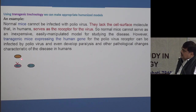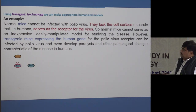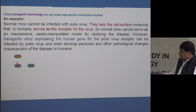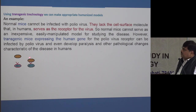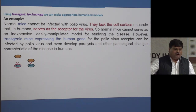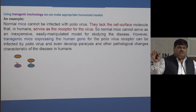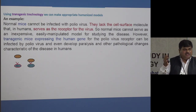Because mice don't have the receptor to internalize the polio virus, no matter how much virus you inject, it won't enter the cell and can't divide. So researchers isolated the gene coding for the human receptor — with its promoter and termination codon — and inserted it at the embryonic stage of mice. Now, this transgenic mouse with the human receptor on its cell membrane can be infected with poliovirus, develop paralysis, and show pathological changes characteristic of human poliomyelitis.